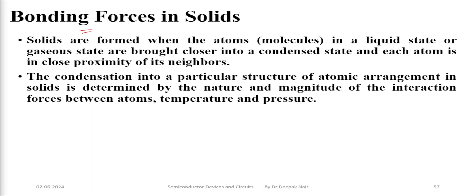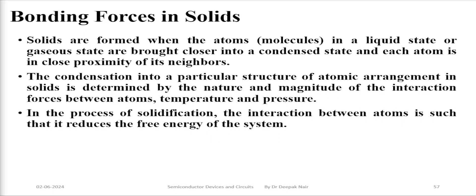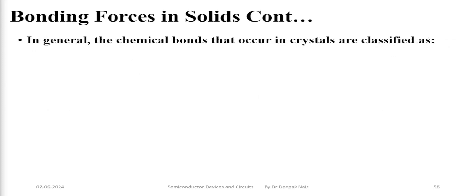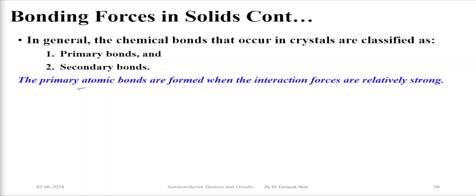The condensation process allows atoms and molecules to arrange in a particular structure, and these arrangements determine the nature of such solid materials. They have their own strong forces between atoms and different behaviors toward different temperatures and pressures. In the process of solidification, the interaction between atoms reduces the free energy of the system. Chemical bonds in crystals are classified as primary bonds and secondary bonds. Primary bonds are formed when the interaction forces between atoms are relatively very strong — meaning they are highly attractive to each other.